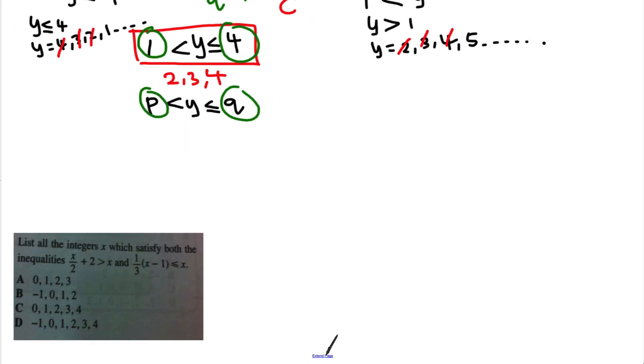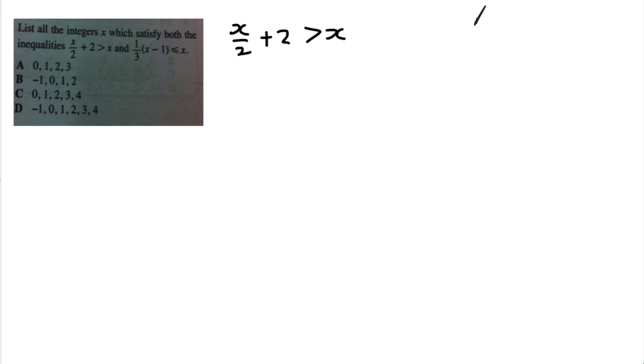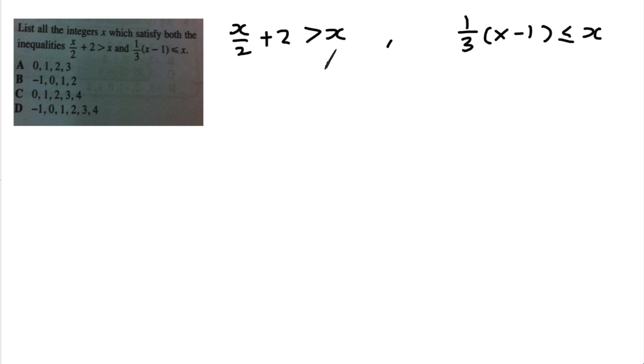Let's have a look at the second question. It says: list all the integers x which satisfy both the inequalities. So we have two inequalities here. I'm going to write them out: x/2 + 2 > x, and the second one involves 1/3. I'll solve this first one first — since I have a fraction, I don't like fractions, so I'll multiply every term by 2.